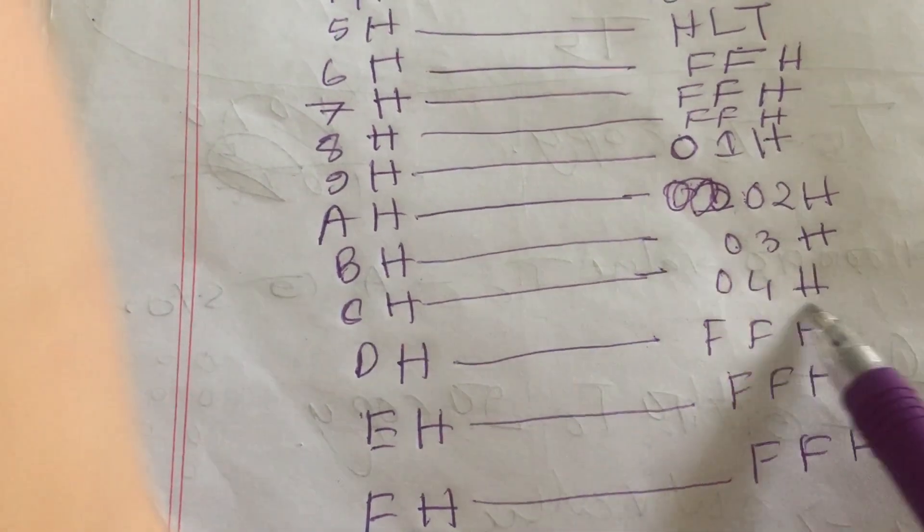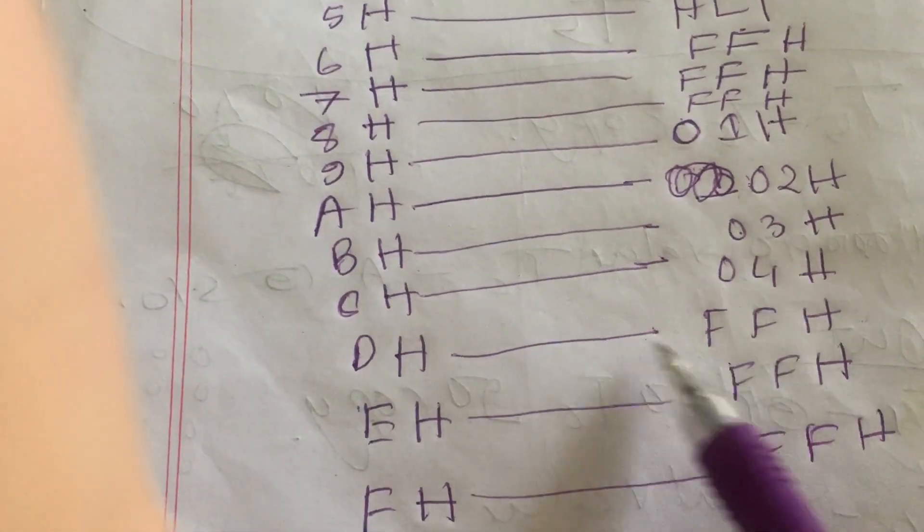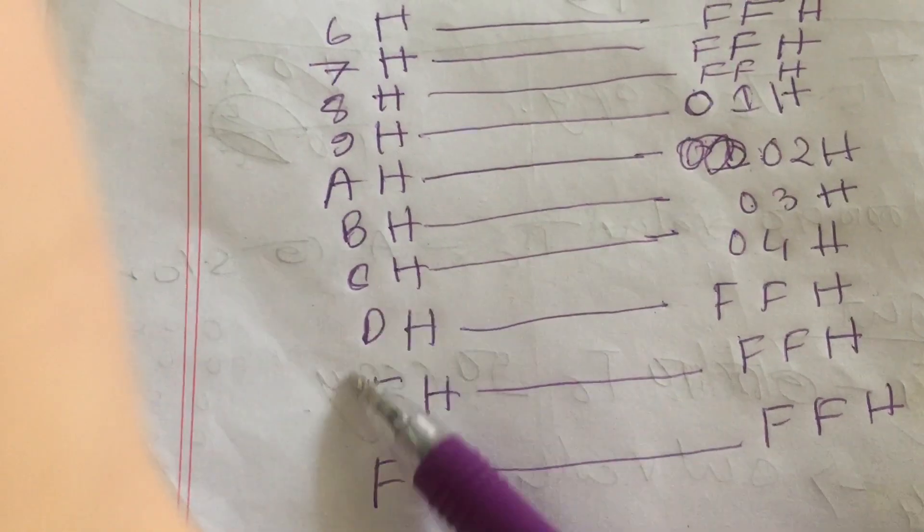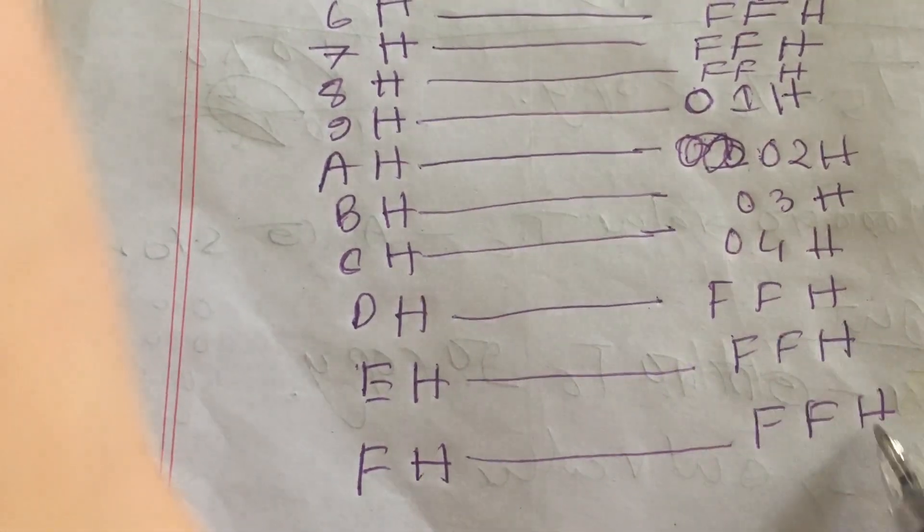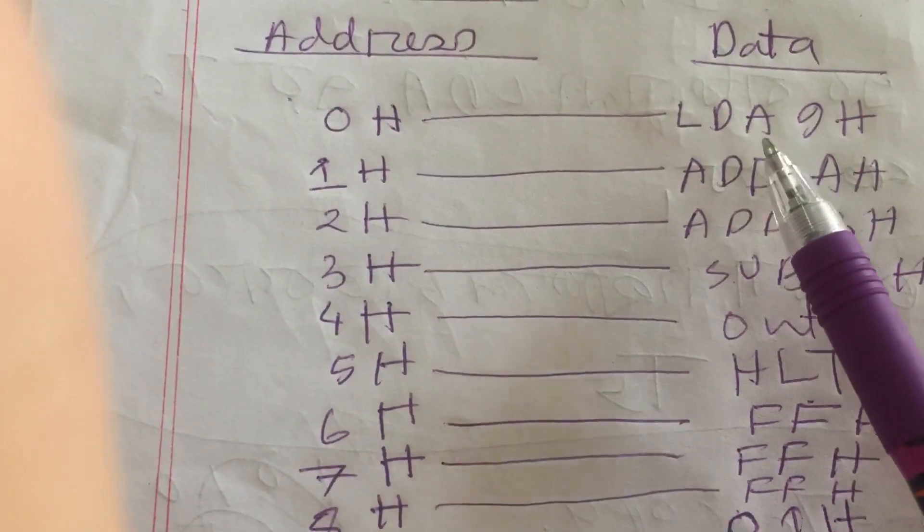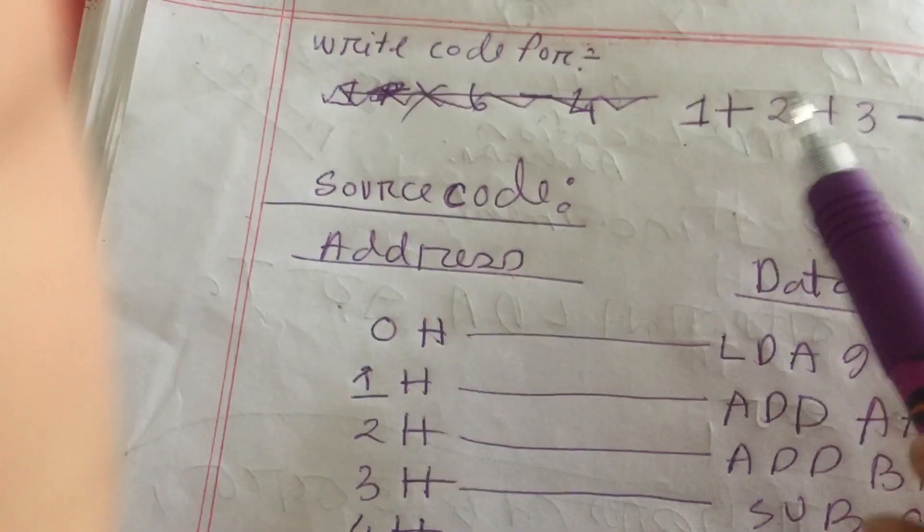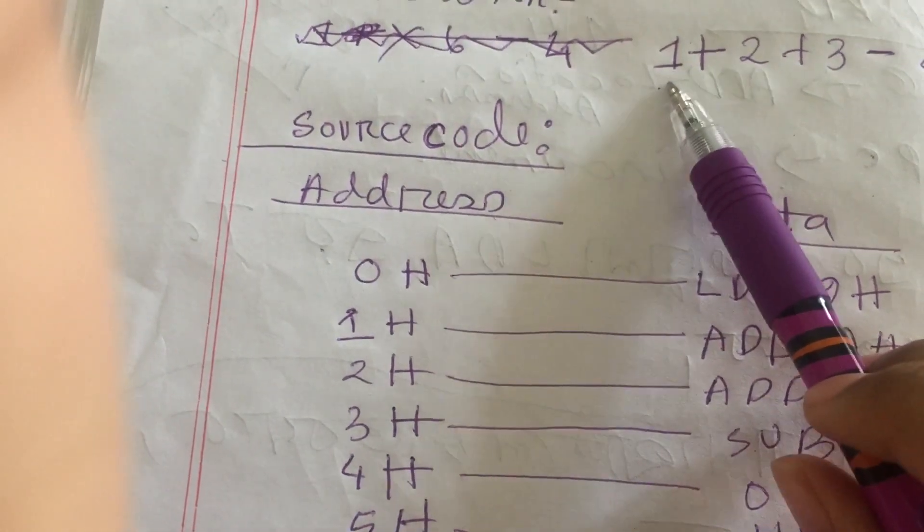And others will be like FFH, that is the finishing. After that there is no number, so the rest of the parts that are blank will be filled up by FFH. So first we have to load that number like 1.